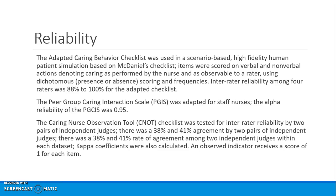Looking at the adapted caring behaviors checklist, inter-rater reliability for the McDaniels instrument was 88 to 100 percent. In the Peer Group Caring Interaction Scale, the alpha was 0.95 — another instrument to measure caring related to peer groups. For the Caring Nurse Observation Tool, inter-rater reliability was calculated by two independent pairs of judges, yielding 38 to 41 percent agreement, and kappa coefficients were also calculated.